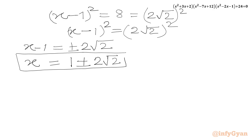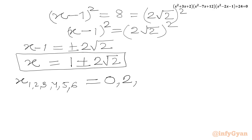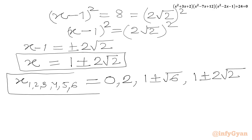In total we have 6 solutions for this hexic equation. They are: x = 0, x = 2, x = 1+√6, x = 1-√6, x = 1+2√2, and x = 1-2√2. This completes our solution to the hexic equation challenge.